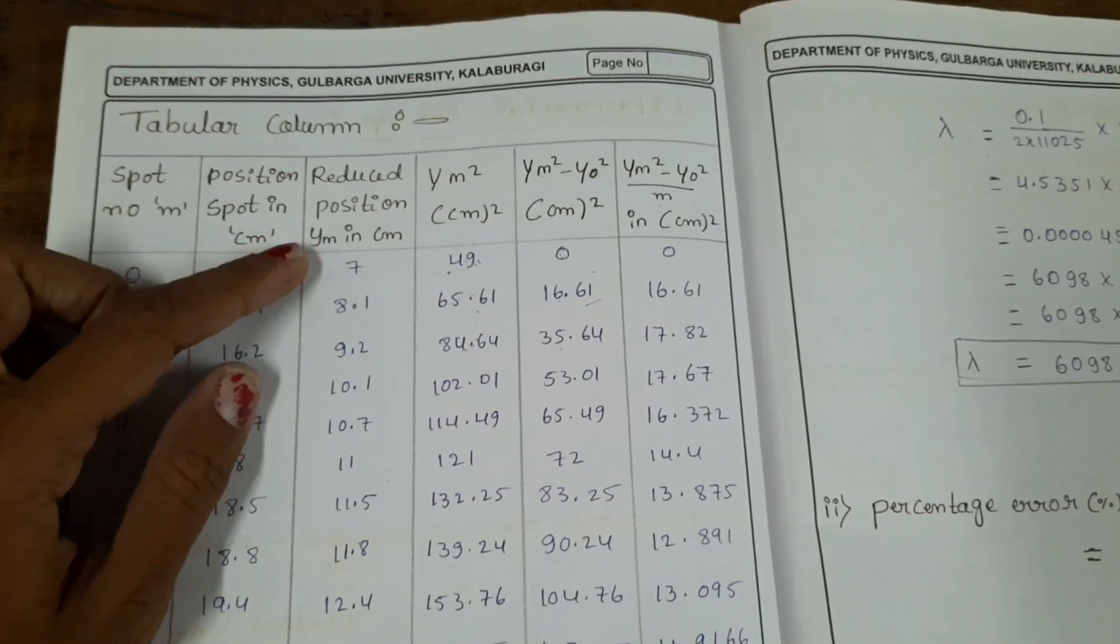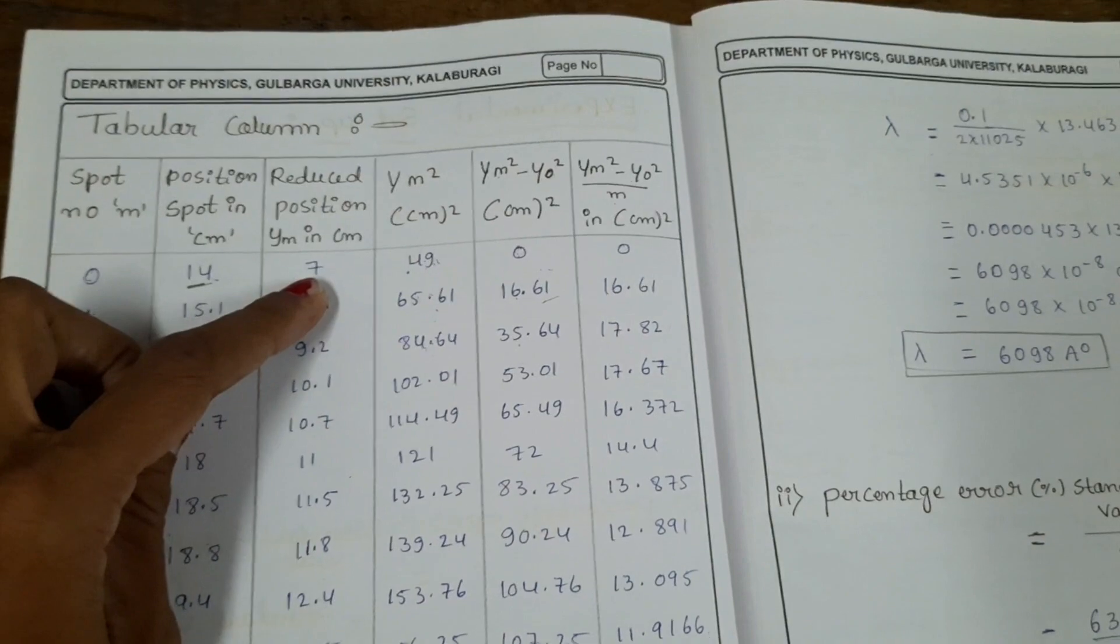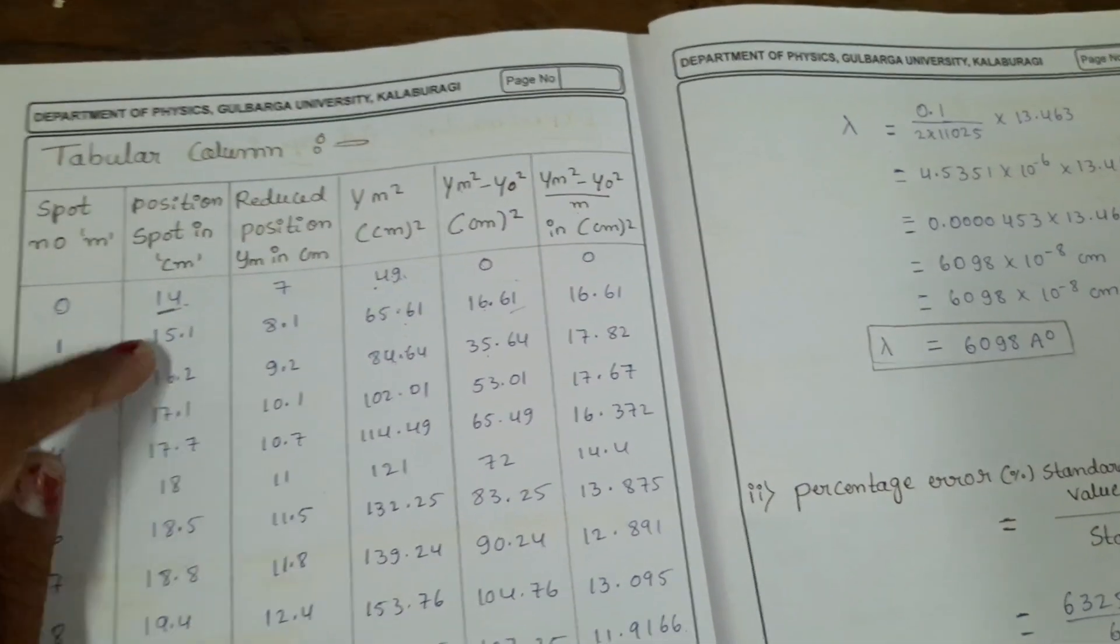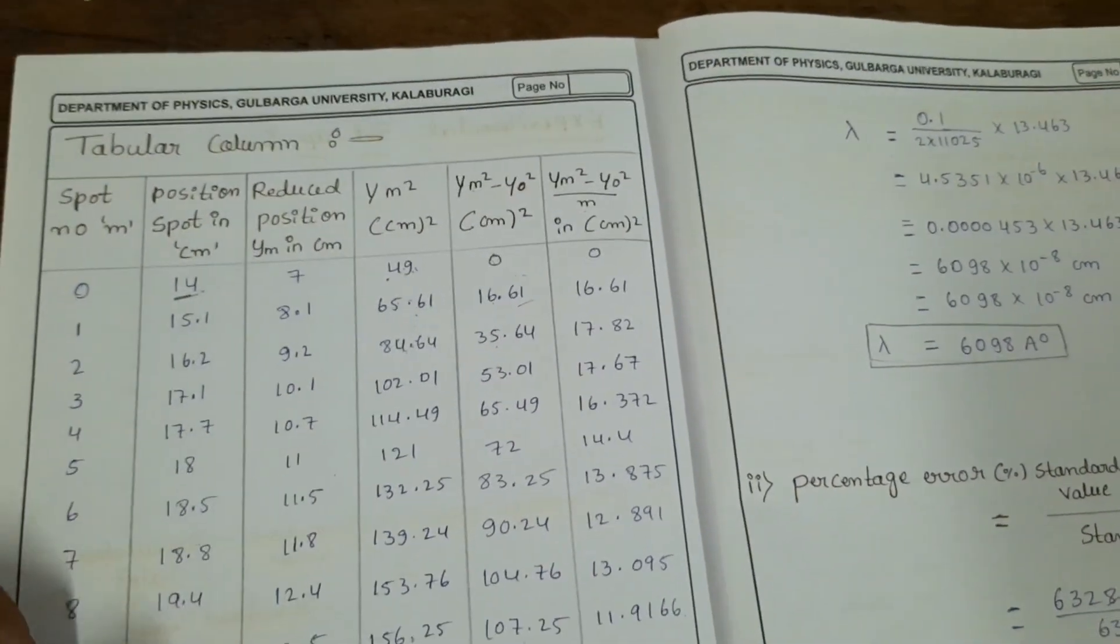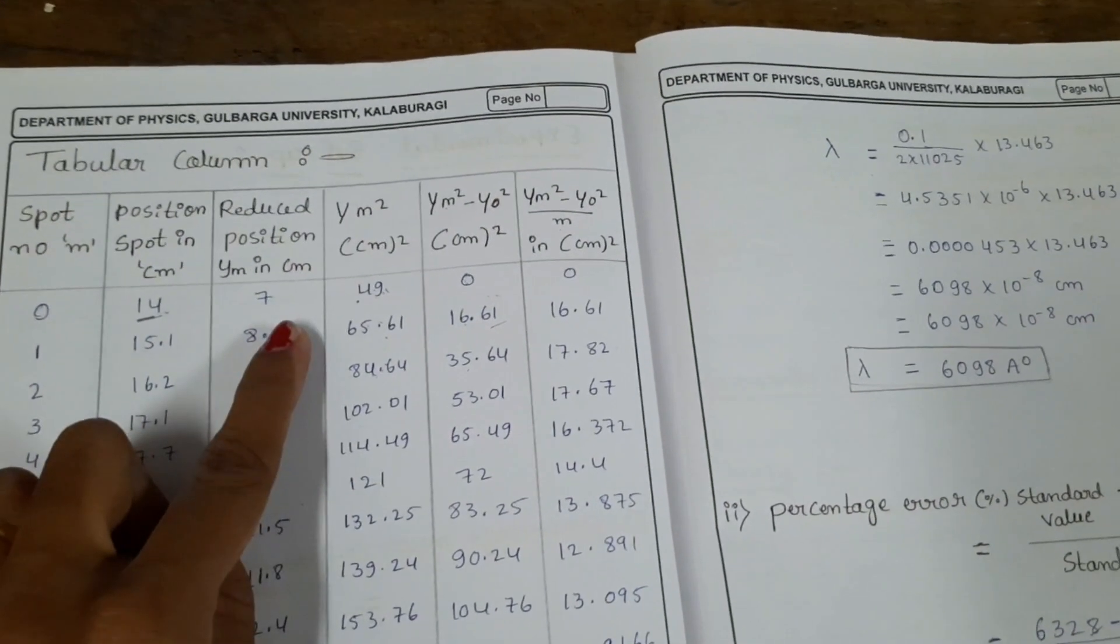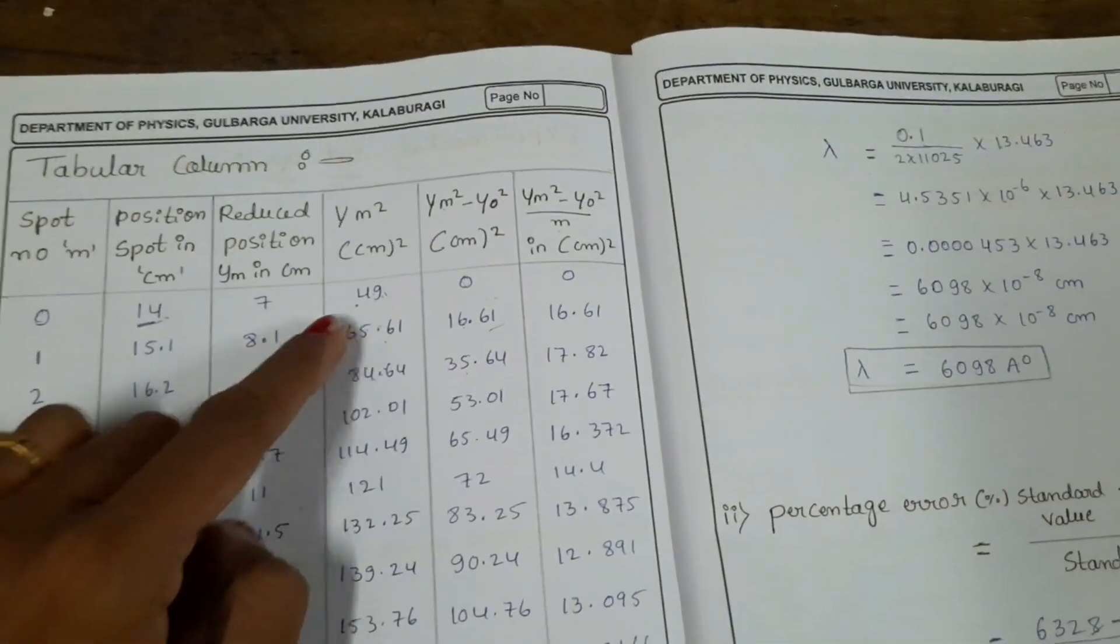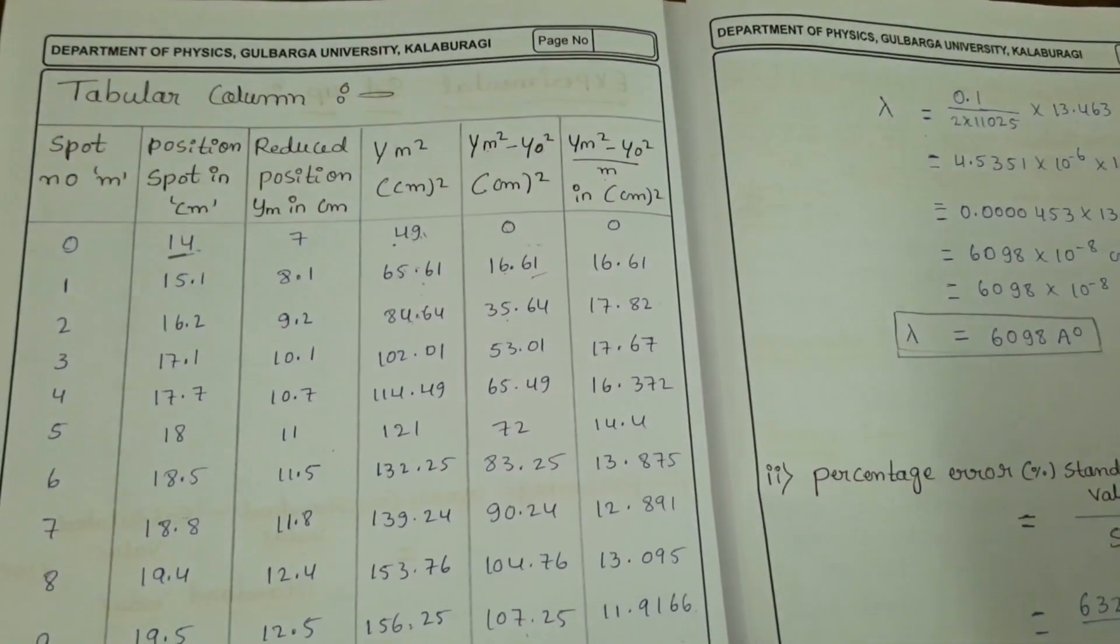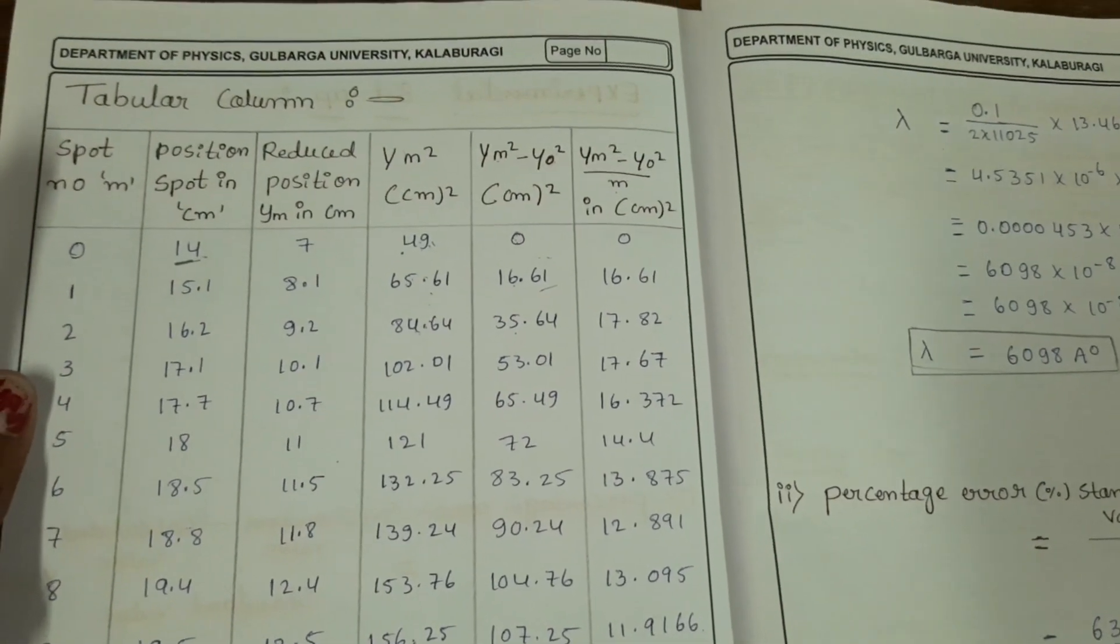Then reduce the position. What you have to do: first reading divided by 2, write 7, then subtract this 7 from all the remaining readings: 15.1, 16.2, like that. For the first reading, if you subtract you will get 8.1 (15.1 minus 7). Then you have to square all these values: y_m squared. Then subtract y_m² minus y₀².